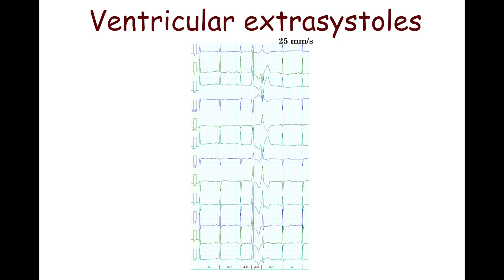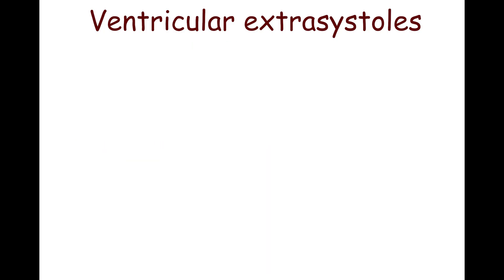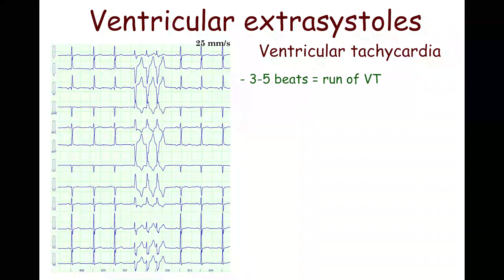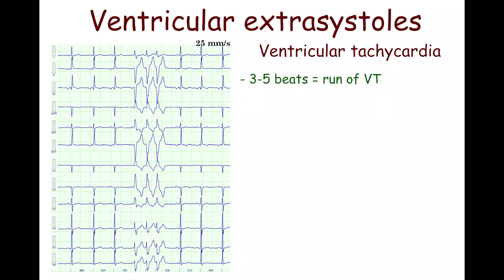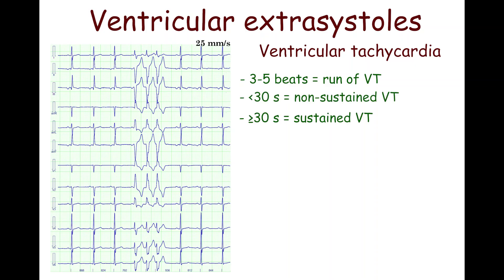Two consecutive ventricular extrasystoles are called a ventricular couplet. Three or more consecutive ventricular ectopic beats are called ventricular tachycardia if the rate exceeds 100 BPM. Ventricular tachycardia is classified as sustained or non-sustained according to whether it lasts more than 30 seconds or less.